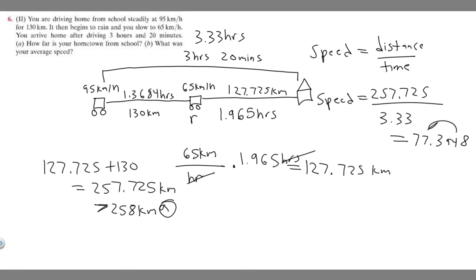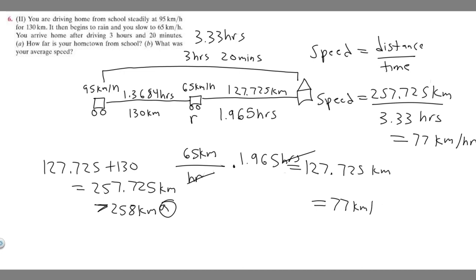Rounding to a whole number, and keeping in mind the units are kilometers over hours, the answer to Part B is 77 kilometers per hour. So Part B is 77 km/h and Part A is 258 kilometers — and that's how you solve this problem.